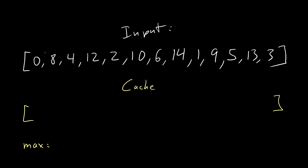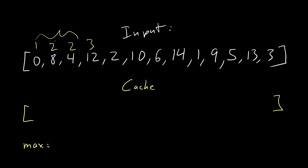Imagine if I already have the answer for the longest subsequence for each subarray. For example, if the answer for [0] is 1, because I can only get zero. For [0, 8] it's 2. For [0, 8, 4] it's also 2, because I could only go 0 then 4, or 0 and 8. For [0, 8, 4, 12] it's 3. Another way of looking at it: what is the longest subsequence in all these arrays, then see that 2 is the longest. Then check: is the last number of the subsequence smaller than me? If it is, then I could add 1 to it. That's dynamic programming.